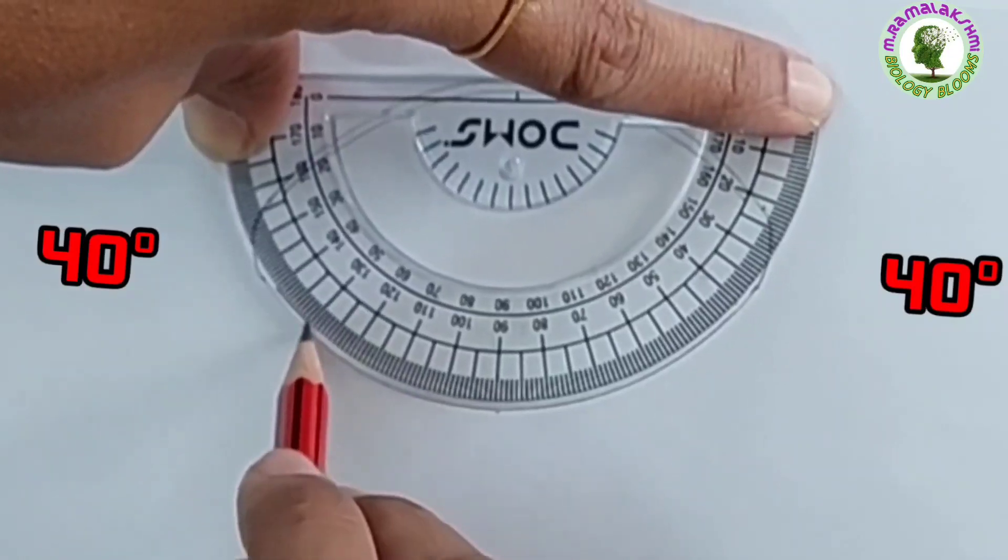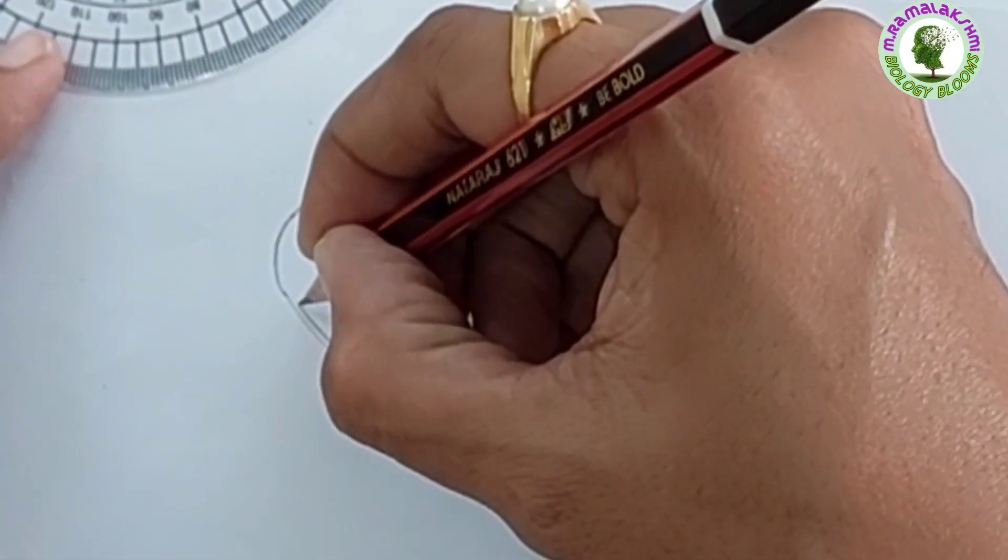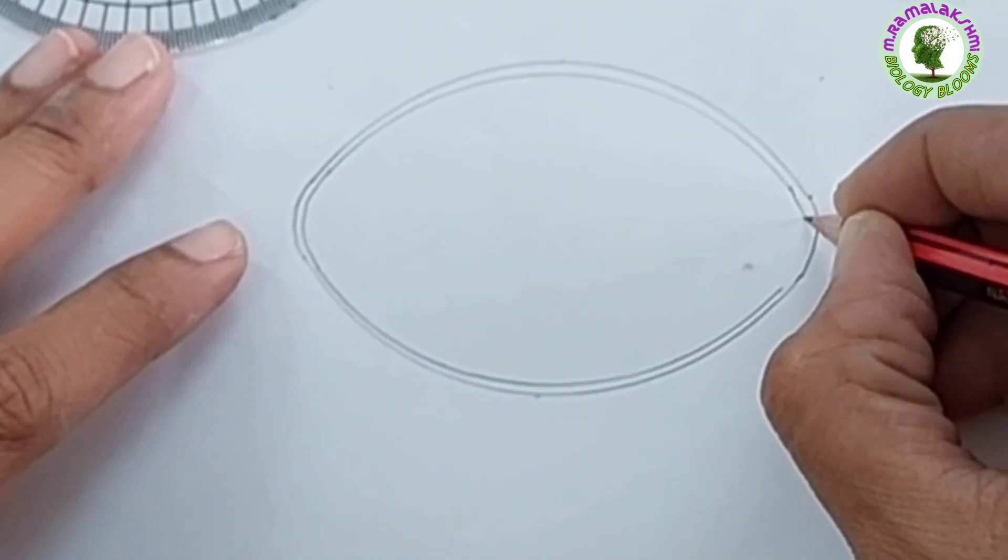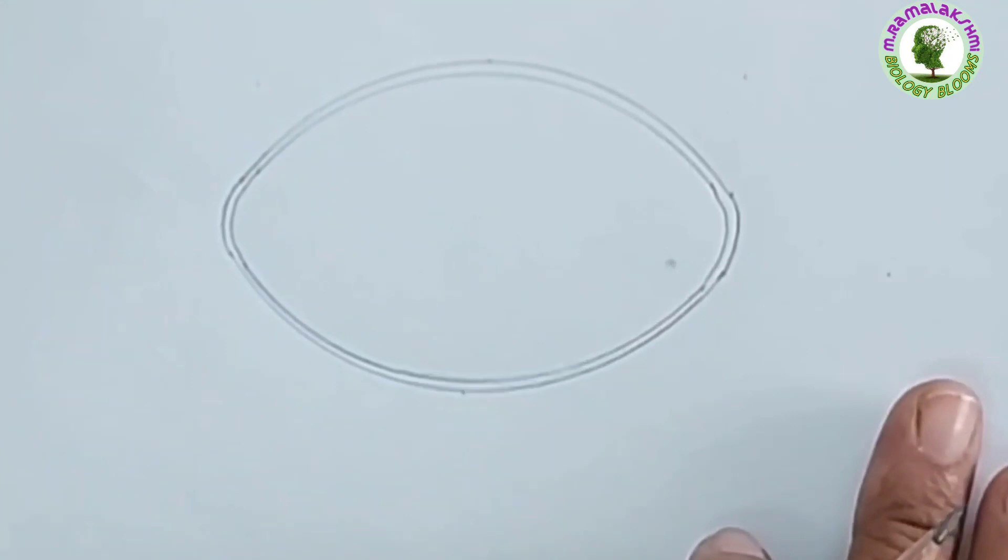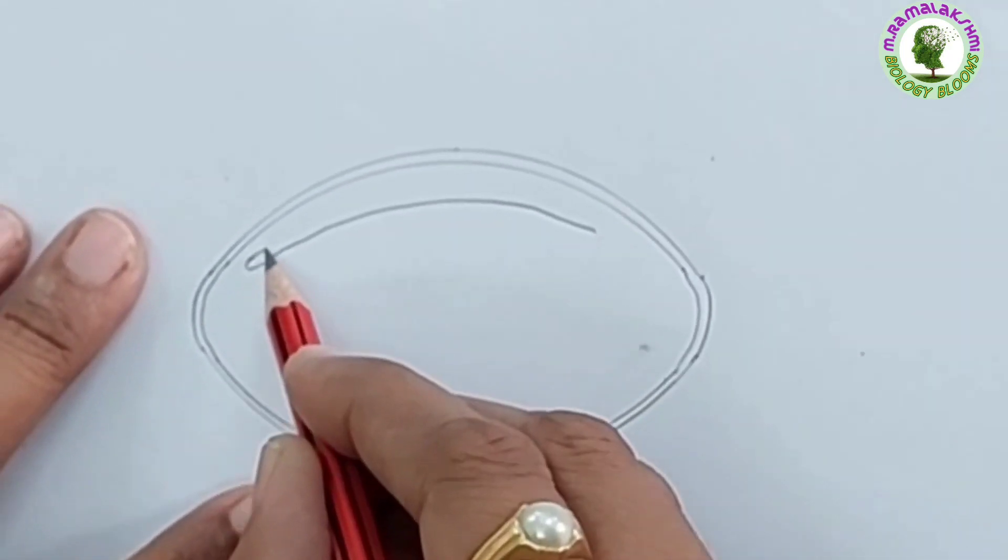Now, join these two dots like this. Now, join these two curves. Draw like this and draw some box-like structures like this.